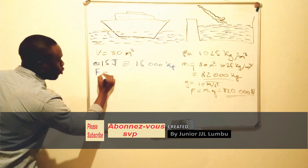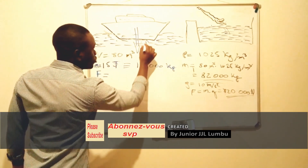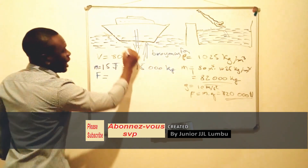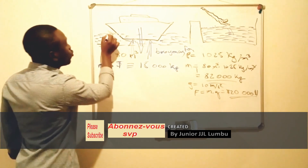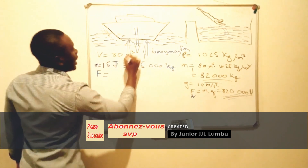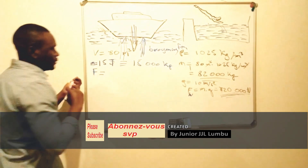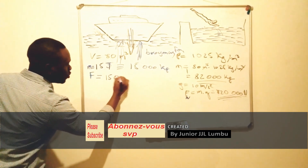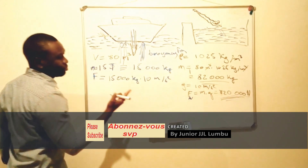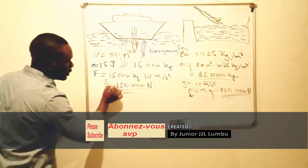The force of our boat is applied on the water — the weight of our boat is applied as a force on the water — and the water, according to Archimedes' principle, which we call the buoyancy force, applies a force equal to the displaced water, which is 820,000 newtons. The force of the boat on the water is equal to 15,000 kilograms multiplied by 10 meters per second squared, which gives 150,000 newtons.